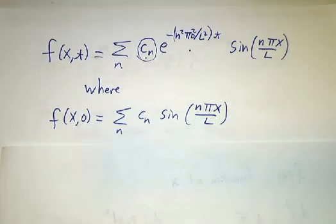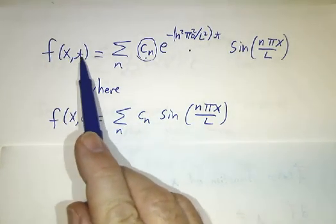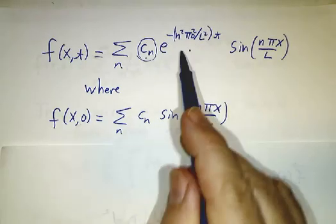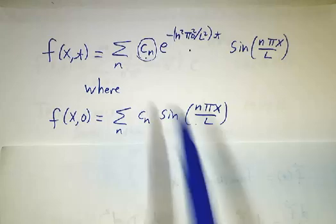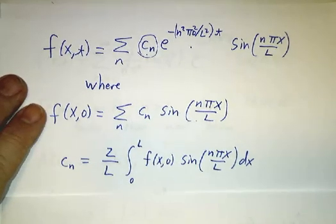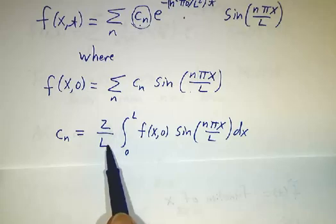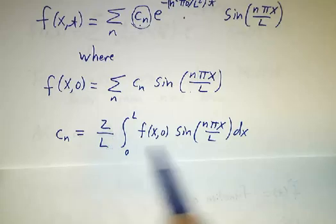And how do we figure out the constant? Well, we just plug in what happens at t equals zero. Our function at t equals zero, these exponentials are all zero, so you get cn sin(nπx/l). Well, you know how to figure out what cn is then. You do it by doing an inner product, which is an integral.